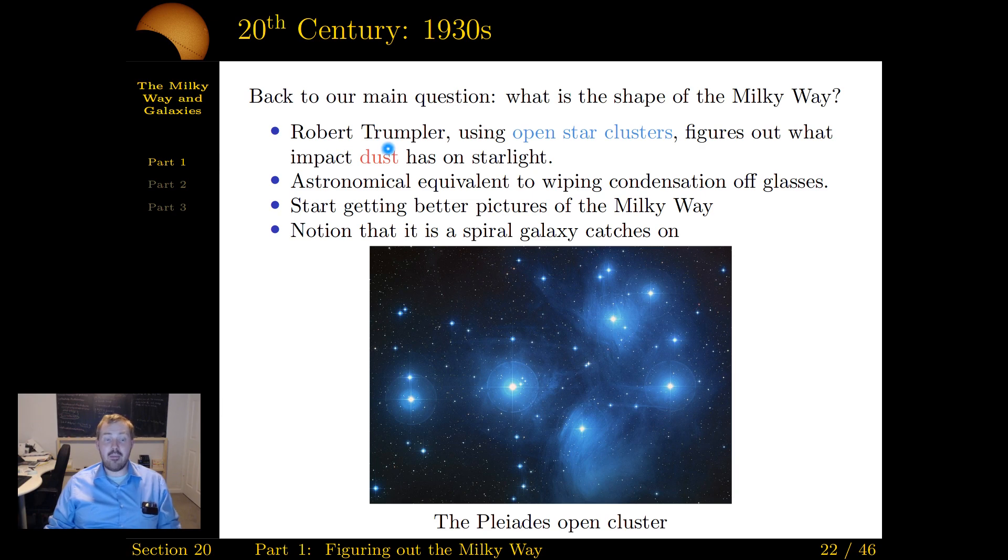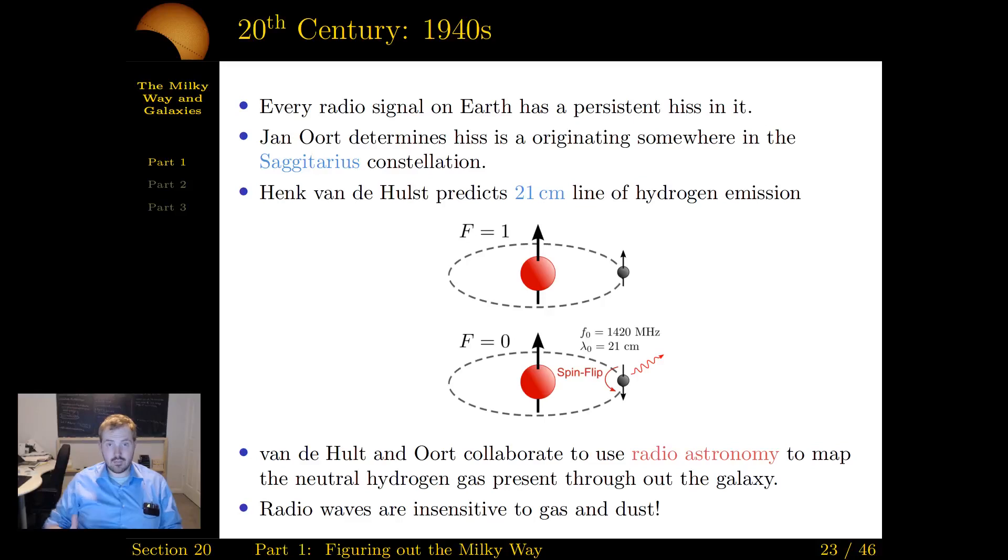So in the 1930s, a man named Robert Trumpler, he starts looking at open star clusters. And by using open star clusters, he's actually figuring out a way to calculate how dust impacts starlights. What kind of impact starlight has on the dust. This sounds incredibly trivial, but I will tell you, this is astronomical equivalent. Any of you who are wearing glasses and they steam up and you wipe them off? This property here, how starlight's impacted by dust, this is the equivalent to taking your steam glasses and wiping them off, getting rid of that condensation. You now have a clearer view of the cosmos.